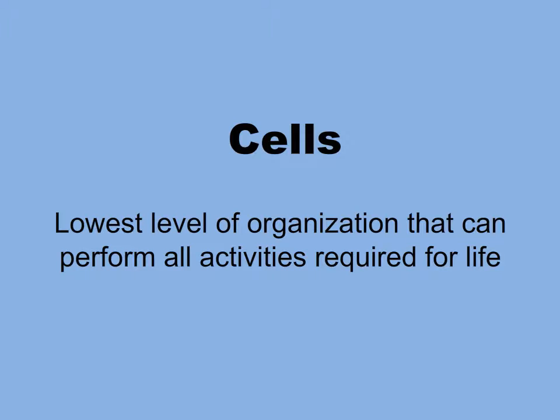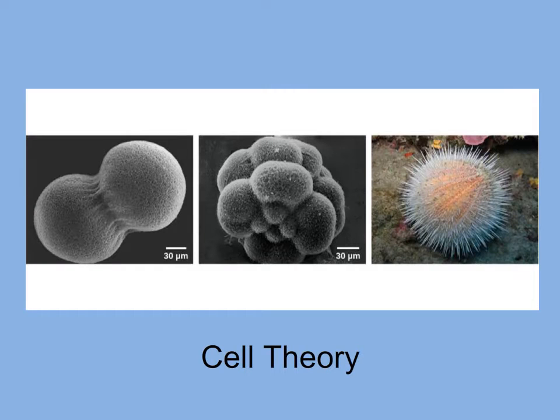Organization below the cell level — for example, the molecules that make up cells — does not display all the characteristics or provide the necessary functions to be considered alive. You started off as a single egg. Fertilized eggs, or zygotes, divide and develop into the mature organism. This illustrates a concept in biology we call cell theory, which states that all life is composed of cells, and that all cells arise from pre-existing cells.